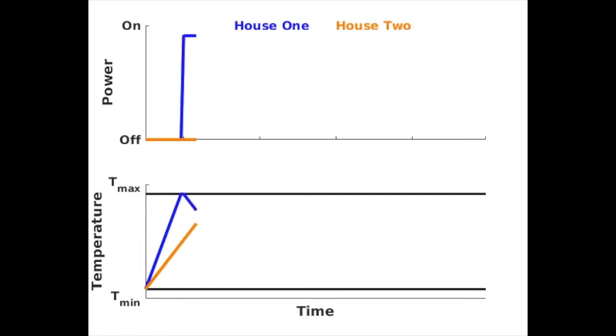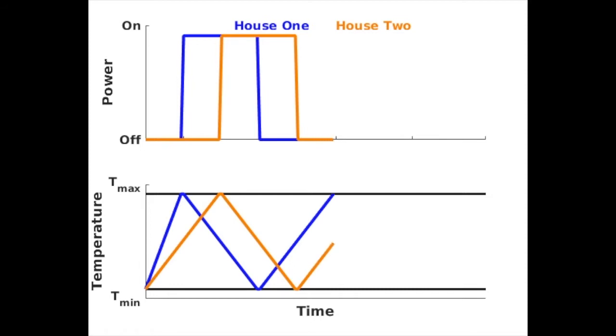It is important to note that despite load manipulation, the houses stay within their comfort zone. One might argue that such a load consumption cycle is possible even when the houses were operating in a conventional manner, but our control strategy guarantees that such a demand consumption will occur.